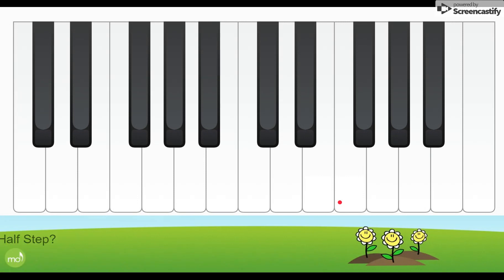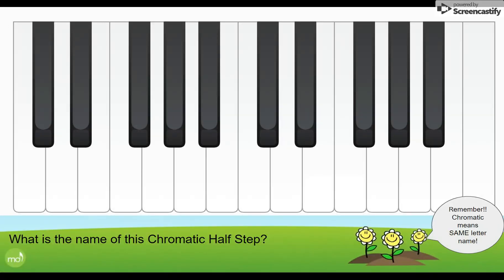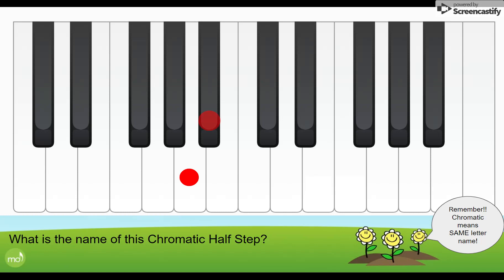Let's practice some chromatic half steps together. Remember, a chromatic half step means they use the same letter name. In this first example we're starting on F and going to the next black key, so it's going to be called F sharp, because we're going up by a half step — remember, a sharp raises a note by a half step. In this next example we're starting on A and going to the very next black key. That one is going to be called A sharp.